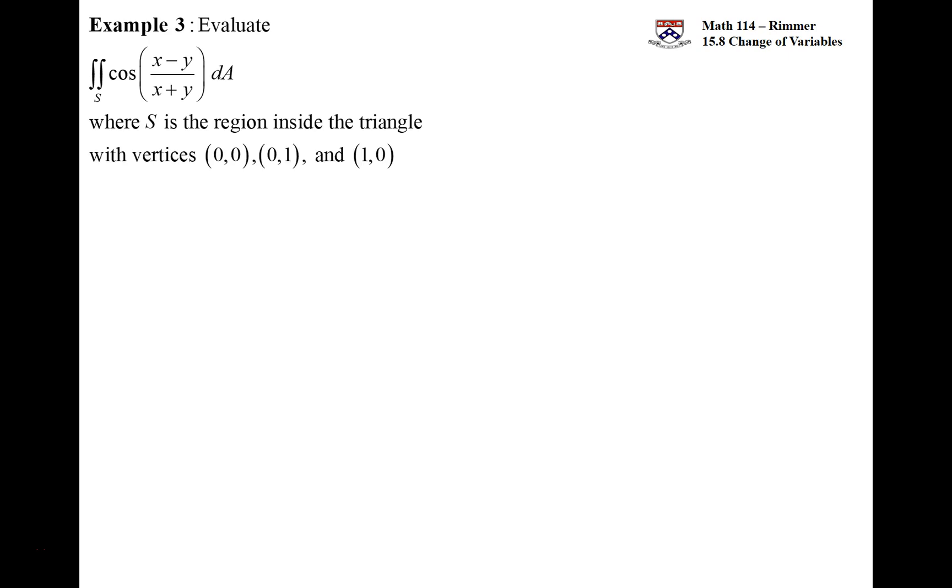Okay, this is a third example of UV substitution. We are changing variables in a double integral. This is the two-dimensional analog of doing a U substitution. I think of it as UV substitution. We have this integrand, this cosine of (x-y)/(x+y), and we have this region, it's a triangular region where we connect one on the x-axis, one on the y-axis, and the origin. The integrand is the problem here.